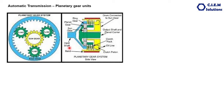Learning about the planetary gear system will not only help in understanding the automatic transmission, but also in understanding the final drives of a vehicle, axles, and final drive of a vehicle. So, in what way is the planetary gear system different from the conventional gear mechanism?